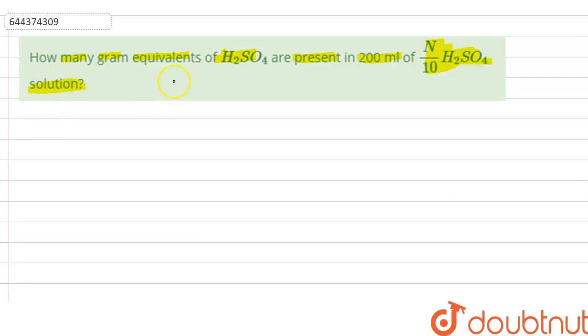In this question, we have to calculate the gram equivalents of H2SO4 which will be present in 200 ml of N by 10 H2SO4 solution. So here normality is given of H2SO4 which is the solute here.